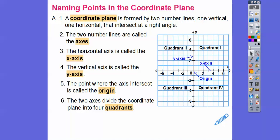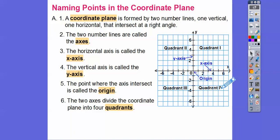The two axes divide the coordinate plane into four quadrants, and they're labeled with Roman numerals. This is quadrant one, and it goes counterclockwise — quadrant two to the left, quadrant three, and then quadrant four. Roman numeral four is a vertical line like a one and then a V.